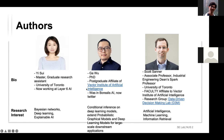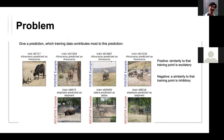For the problem definition: given a prediction, we want to know which training data contributes most to that prediction. For example, with a rhino image, positive samples are those whose similarity to the training point x_i is excitatory, and negative samples are those where similarity to that training point is inhibitory — so it's not simply about visual similarity, but about having a negative effect.